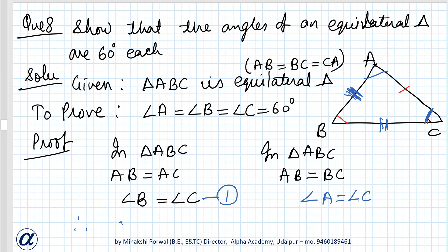Therefore from 1 and 2, we can say that A, B, and C all three are equal.